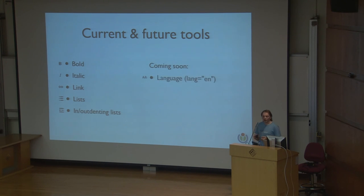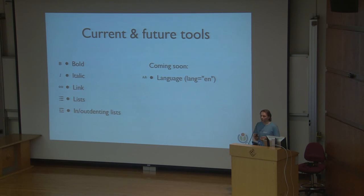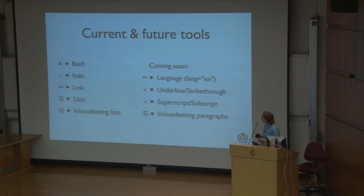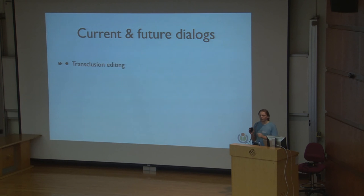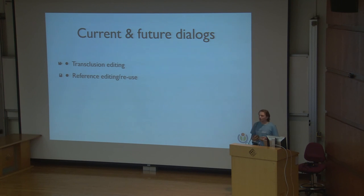The current tools that are live include bold, italic, links, lists, and indent and outdent for lists. The ones we're currently working on are language — so you can change what language certain text is rendered in, which is very important for right-to-left languages and for accessibility. Also underline, strikethrough, superscript, and indenting paragraphs. I also encourage you to look into template data if you're doing a lot of template editing — it was rolled out recently and is getting more traction. It makes it easier to edit and use your templates.